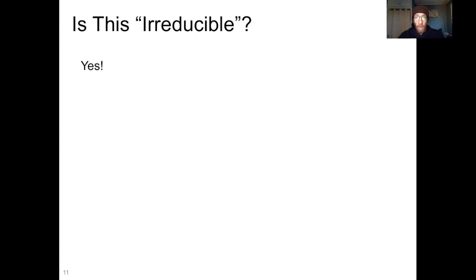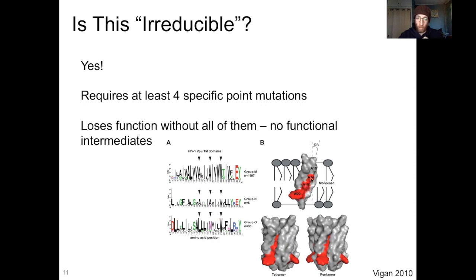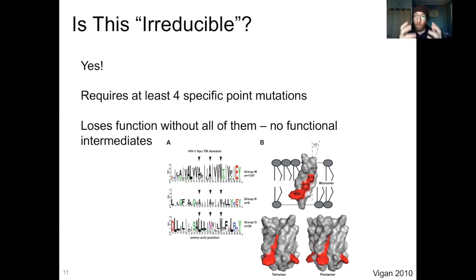Now, is this novel trait irreducible? Yes — this novel functionality of VPU is in fact irreducible. There's been a lot of work on this. It requires at least four specific point mutations. One study from 2008 found that there are two specific regions within the VPU protein, and if you swap out those regions with the chimp version, it loses its ability to antagonize tetherin. A later study from 2010 found that within one of those regions, there are three specific mutations — you can see them highlighted with arrows in this figure — that are required for this tetherin antagonism. If you remove those mutations, you don't have a functional intermediate; it's basically an on-off switch. So that means three plus whatever's in the other region — at least four specific point mutations are required for HIV-1 group M VPU to antagonize human tetherin. That is an irreducible trait according to Michael Behe's criteria.